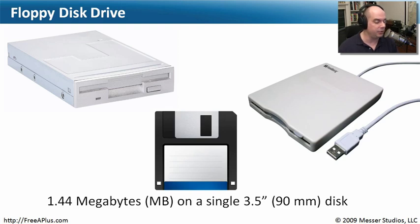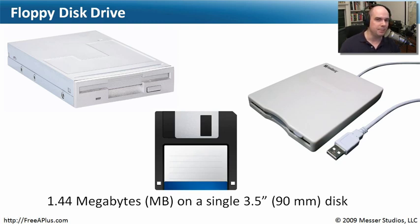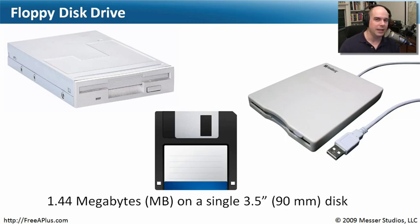If you look at a floppy drive, it's 3½ inches — that's where we get that size — and it holds 1.44 megabytes. That's megabytes, not gigabytes. The small USB flash drives we use today store gigabytes and gigabytes of data, so you can see why floppy disk drives really aren't used much anymore.